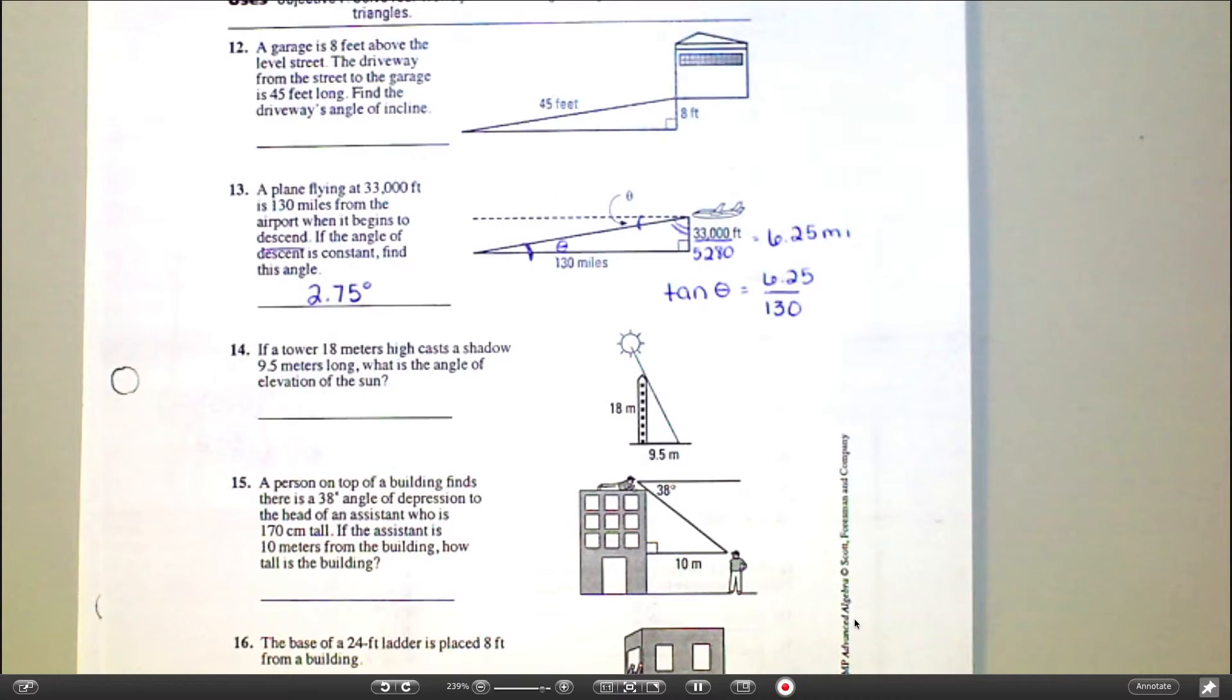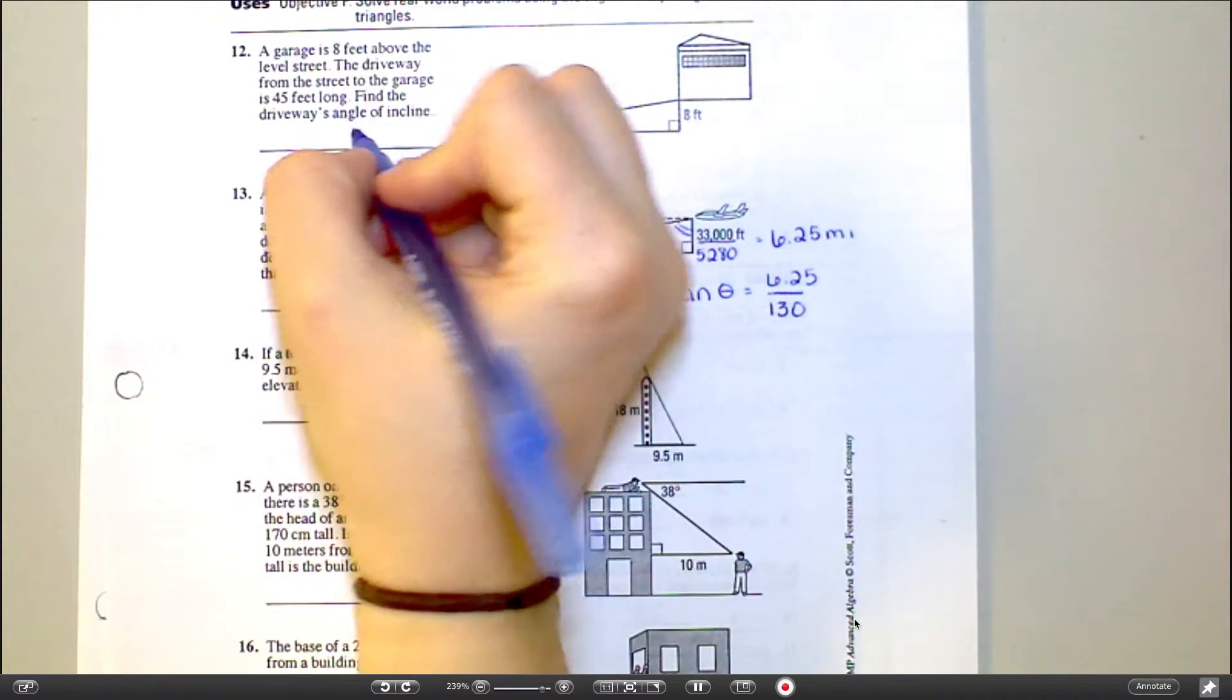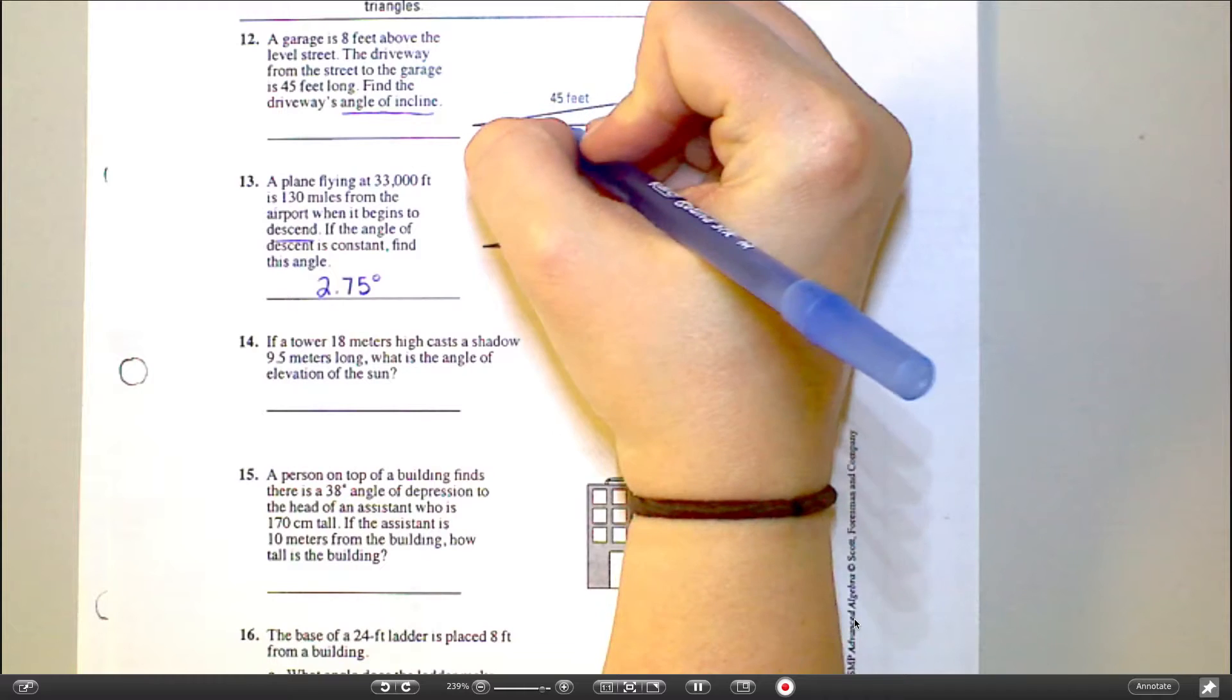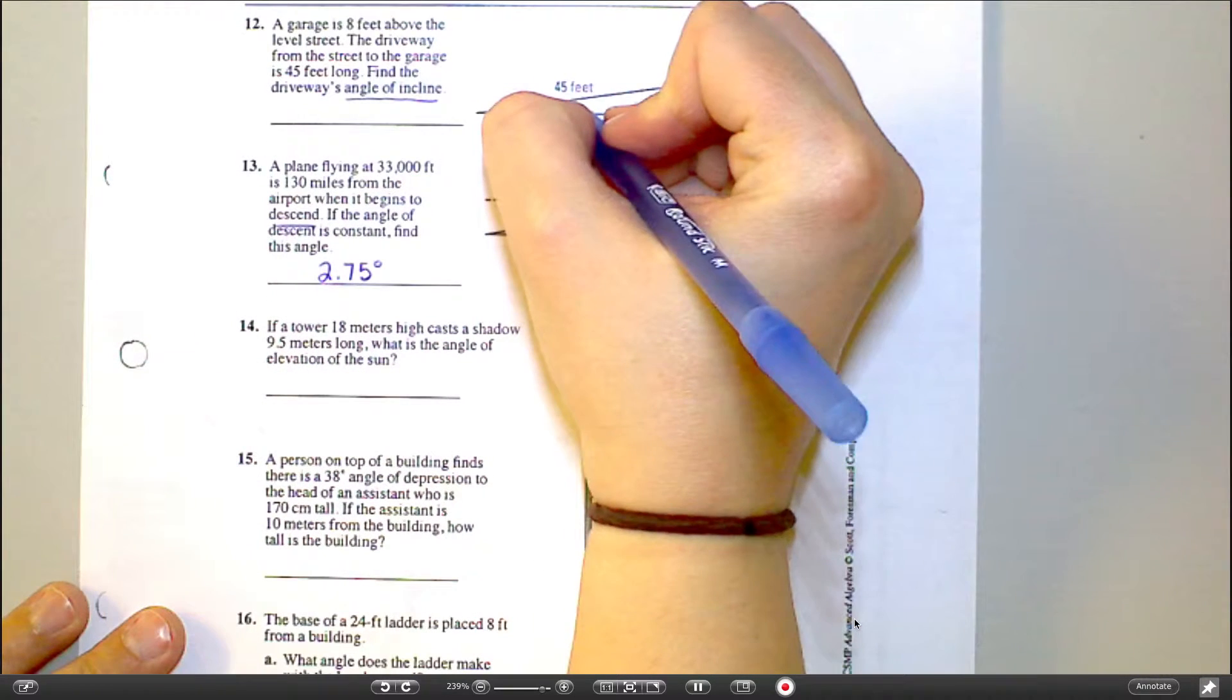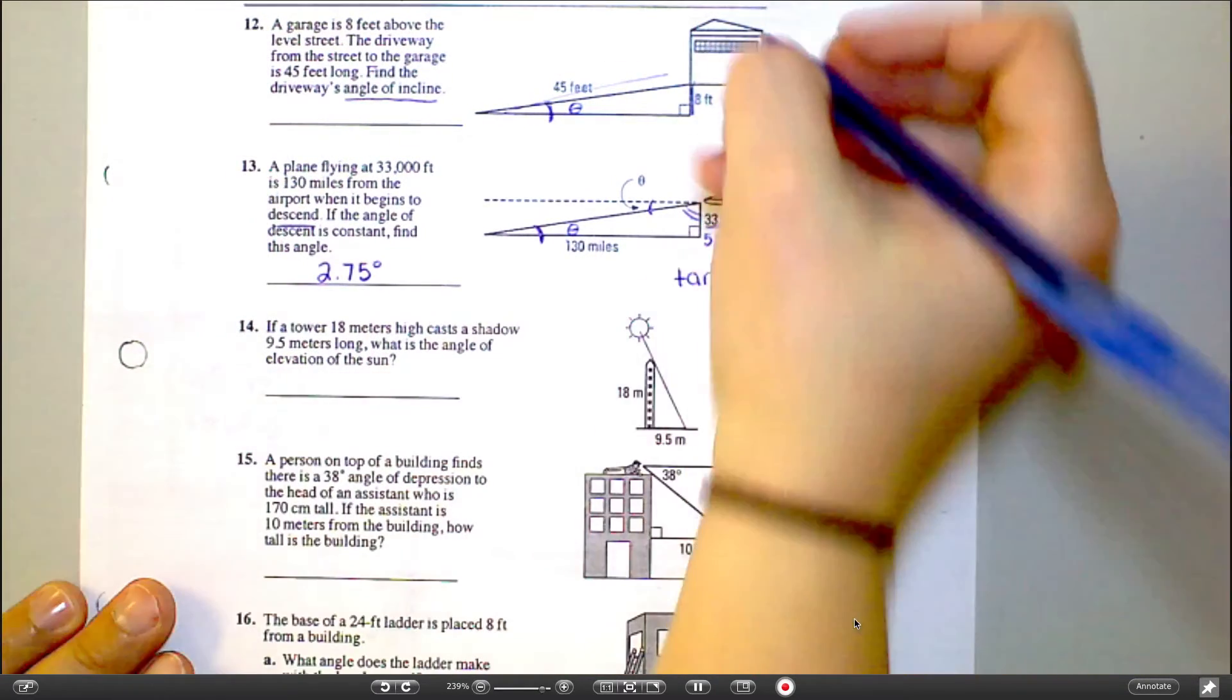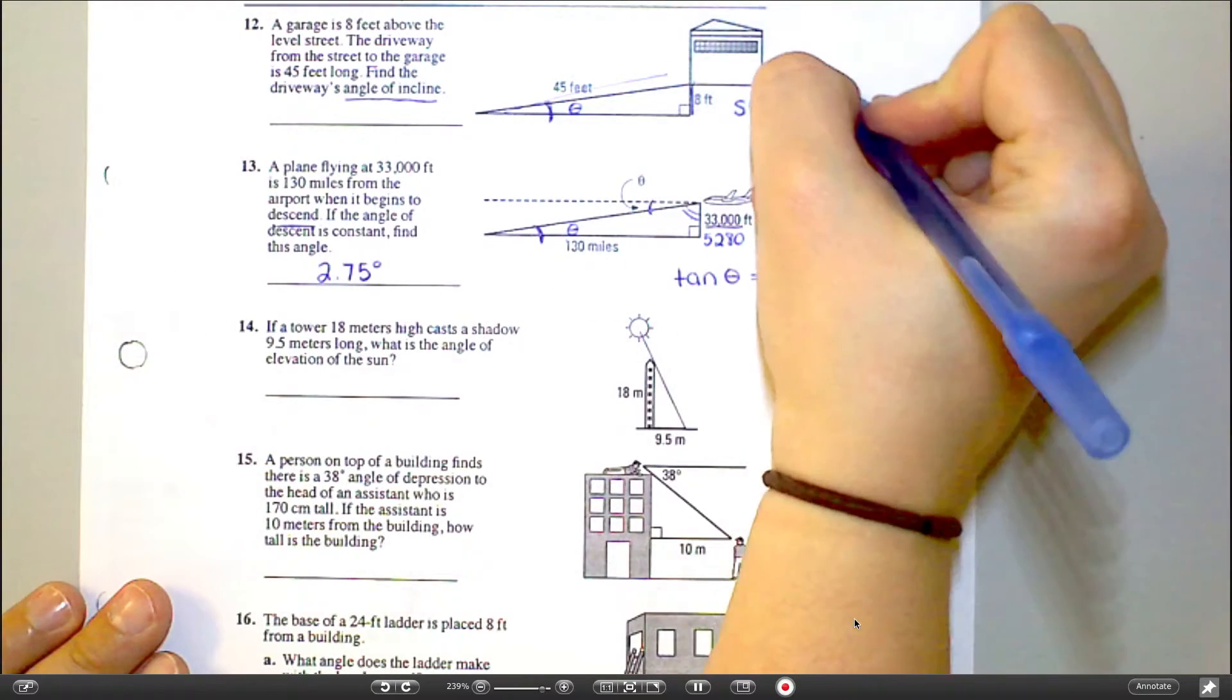Let's look at 12. Well, a garage is 8 feet above street level, so this driveway is slanted. And it wants me to find the angle of incline, which is the same thing as an angle of elevation. So which angle is that that I'm looking at? It's this little guy in the corner. Because you're asking yourself, what angle is your driveway sloping upward at? So this is the angle you're trying to find. If you know this number and this number, what's the trig function is this going to be? This is sine.